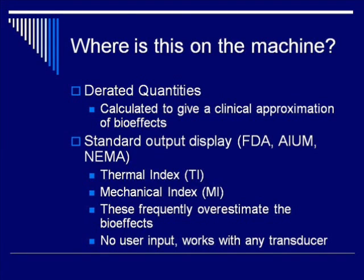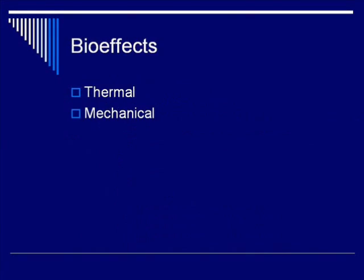The two quantities we'll be discussing are the thermal index and the mechanical index. These numbers frequently overestimate the possible bio-effects. They're built to be very conservative, and so it's important to consider that when you're using these in your clinical practice. They require no user input and work with any transducer. They're usually displayed in the upper right or lower left-hand corner of the display on your ultrasound machine. We'll come back to those indices after we discuss the bio-effects themselves.